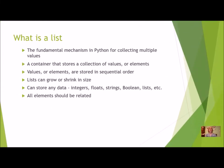Let's just review what is a list. Remember that it is the fundamental mechanism in Python for collecting multiple values. That means it's a container that stores a collection of values or elements. It can store more than one value, which is very useful. These values are called elements and they are stored in sequential order.